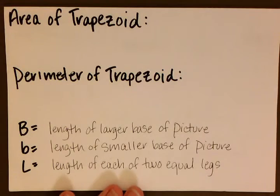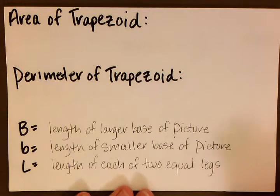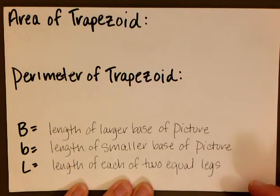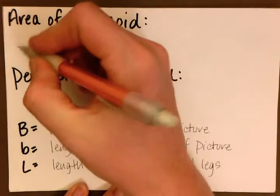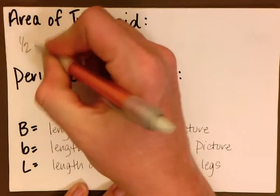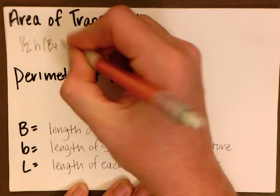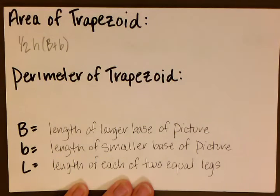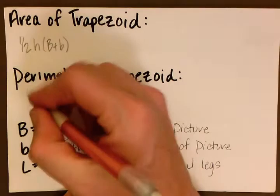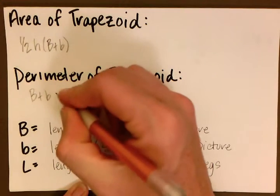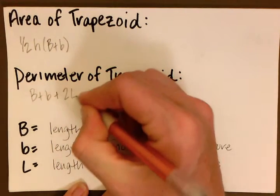So we need to know the area of the trapezoid. We also need to know the perimeter of a trapezoid. The area of a trapezoid is one half height multiplied by base plus base. The perimeter of a trapezoid is base plus base plus 2L.